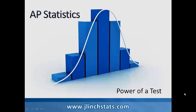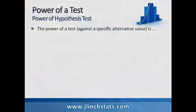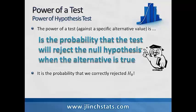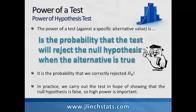Today we're going to talk about the power of a test, so please turn in your study guide to the power of a test section. The power of a test against a specific alternative value is the probability that the test will reject the null hypothesis when the alternative is true. In practice we carry the test out in hopes of showing that the null hypothesis is false, so high power is very important.